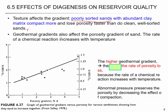Thermal gradients also affect the porosity gradient, and the rate of chemical reaction increases with temperature. At higher temperature, you have a possibility to lose porosity faster. So you have a positive gradient versus temperature — as temperature increases, you have a higher positive gradient. A geothermal gradient means the faster rate of porosity loss because of faster chemical reaction.